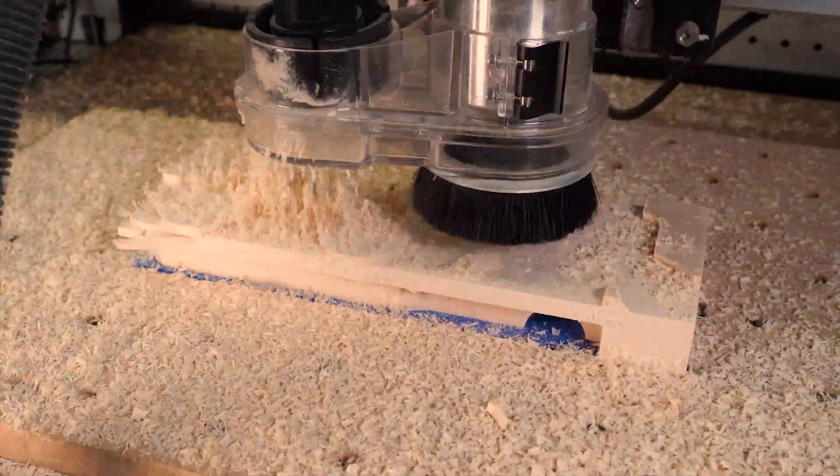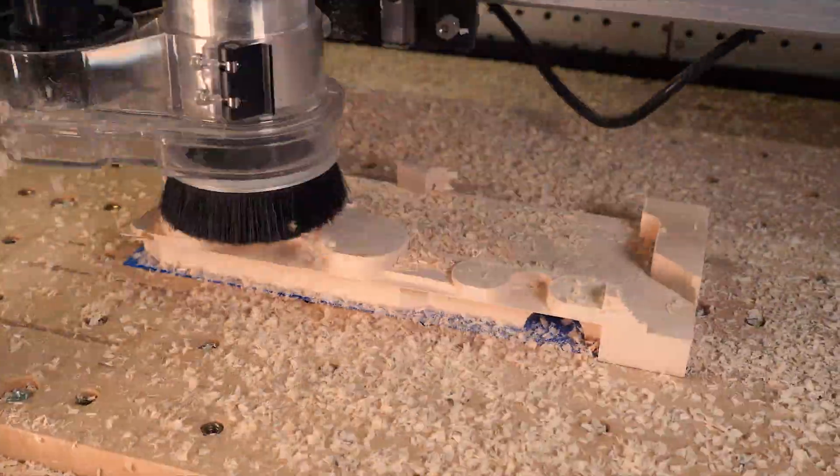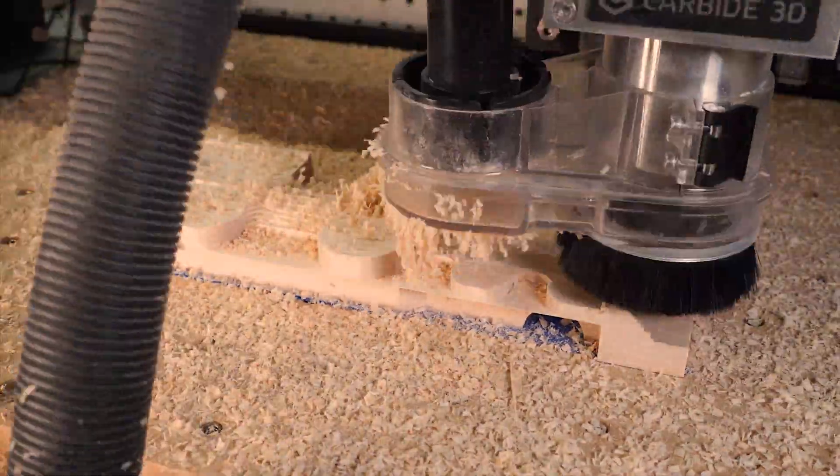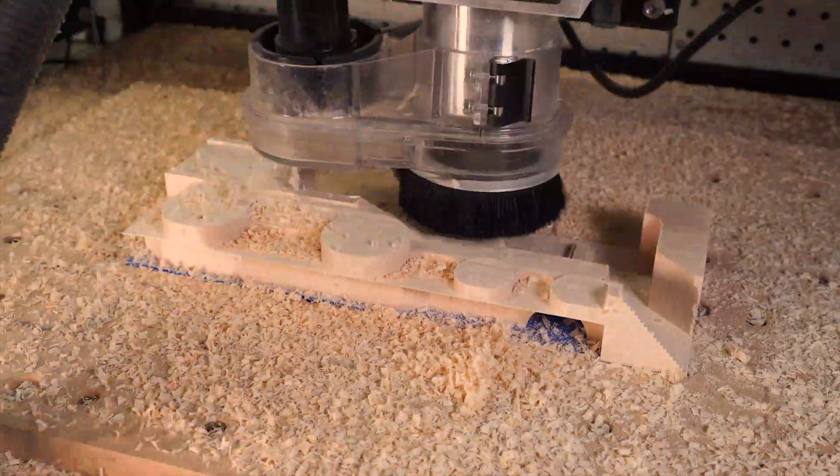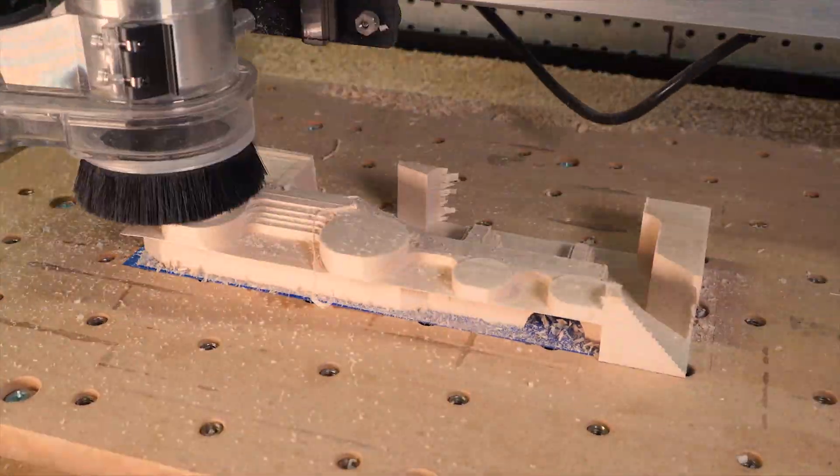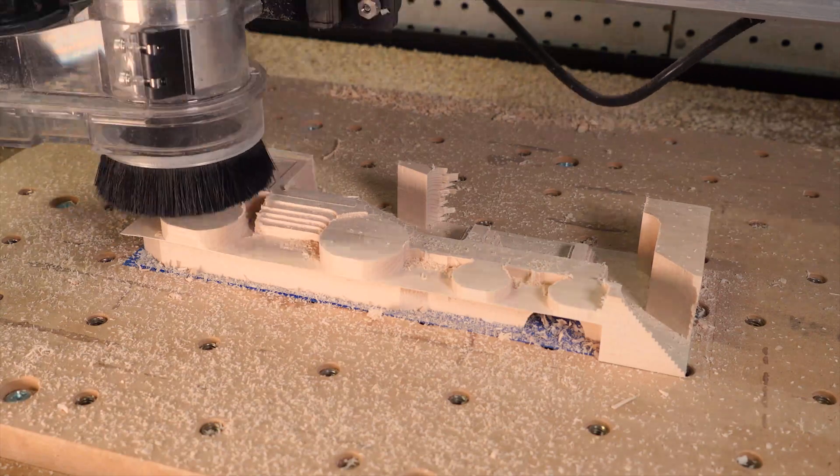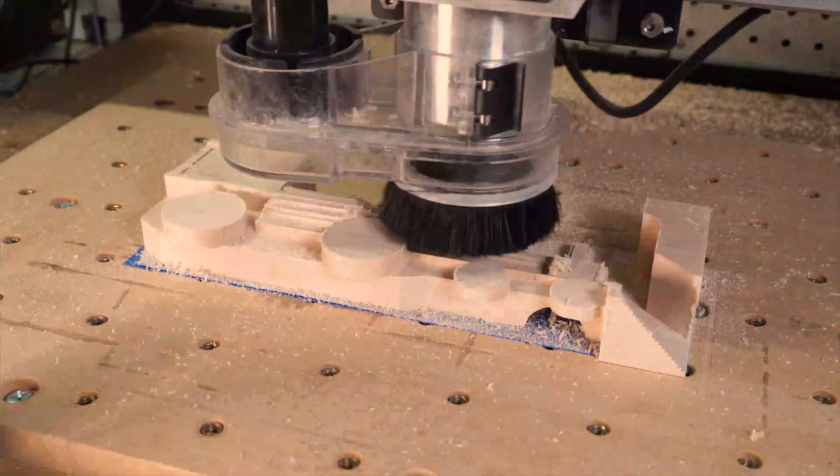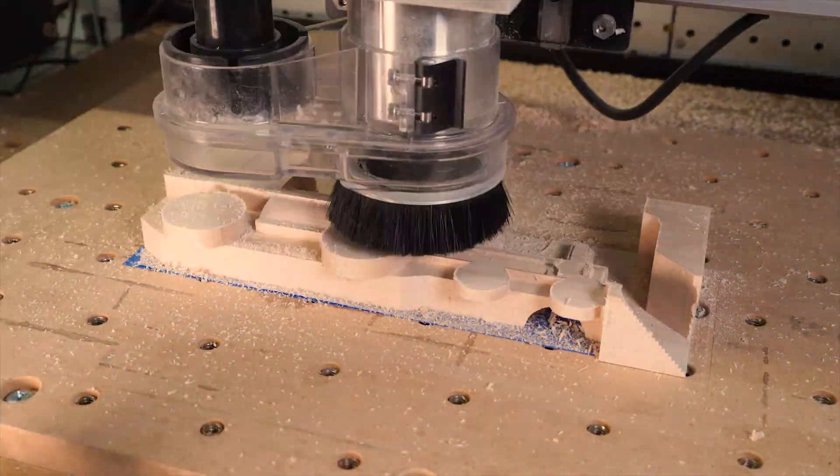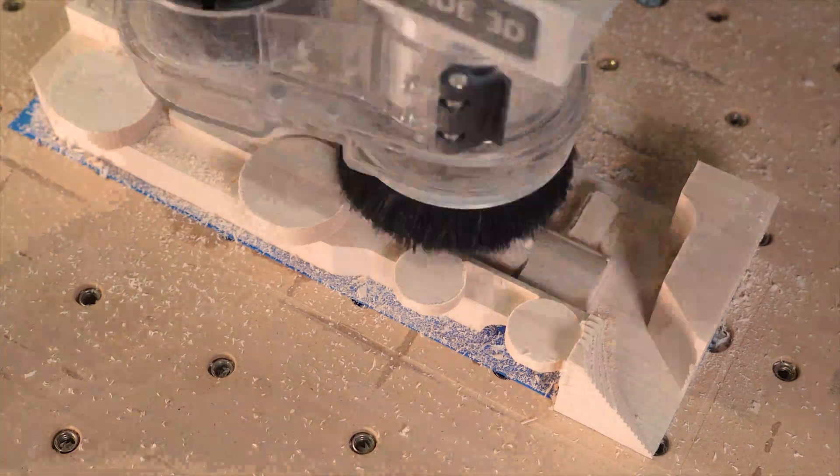I started off by using a larger half-inch bit to do all the roughing operations on the outside of the train. I switched to a finer bit that could reach into those smaller areas. Once that was finished, I changed out to a ball end mill for the finishing passes to bring the surface into the shape and texture that I was looking for.